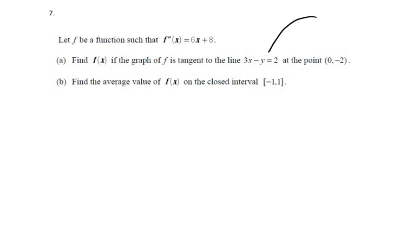It's important to remember if we have some curve f(x) and a line tangent to it at some point, at the point of tangency not only do the tangent line and the curve share the same x and y value, they also have the same derivative. The tangent line 3x minus y equals 2 has a slope of 3, so at the point of tangency which is at (0, -2), the derivative is 3.